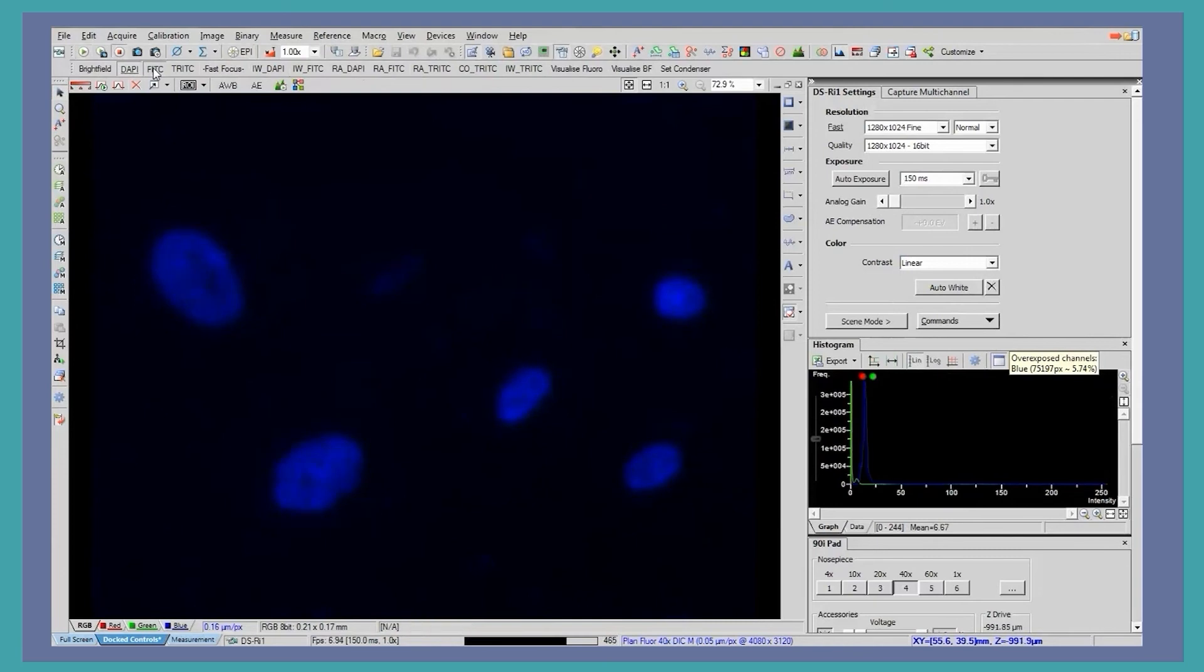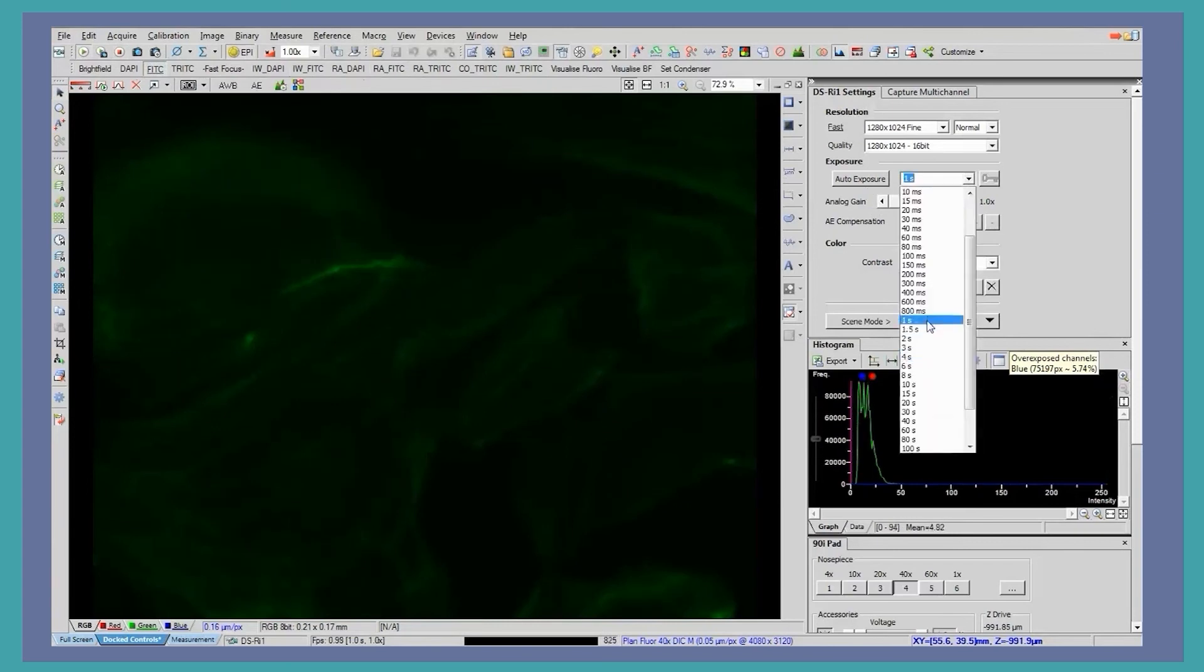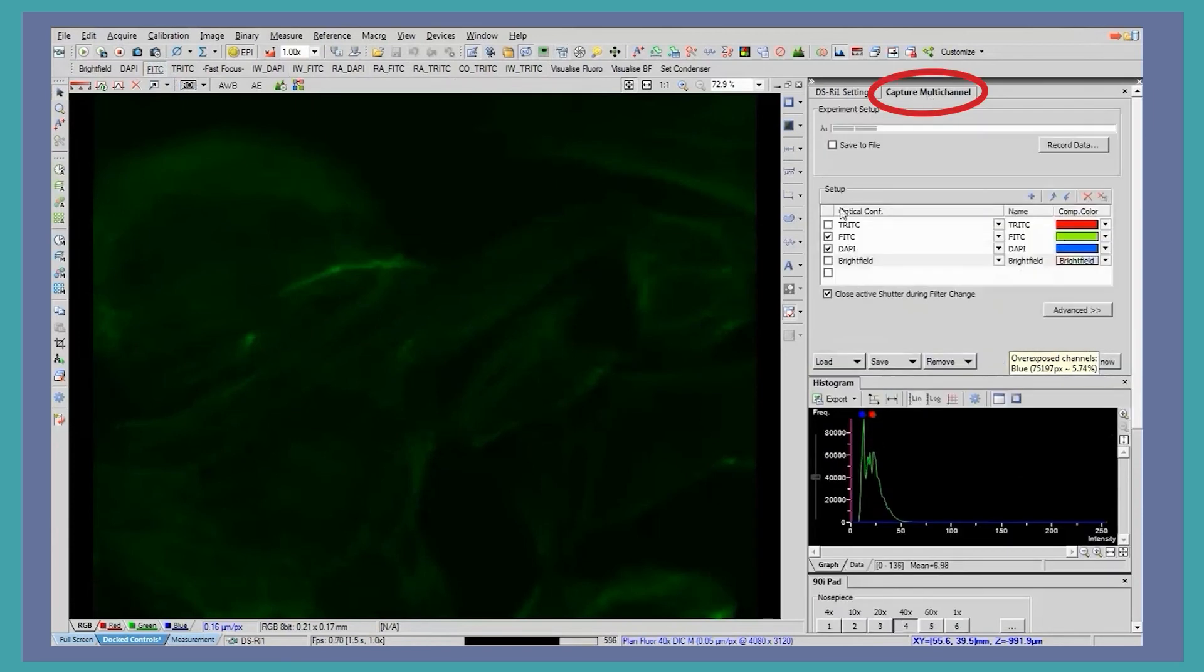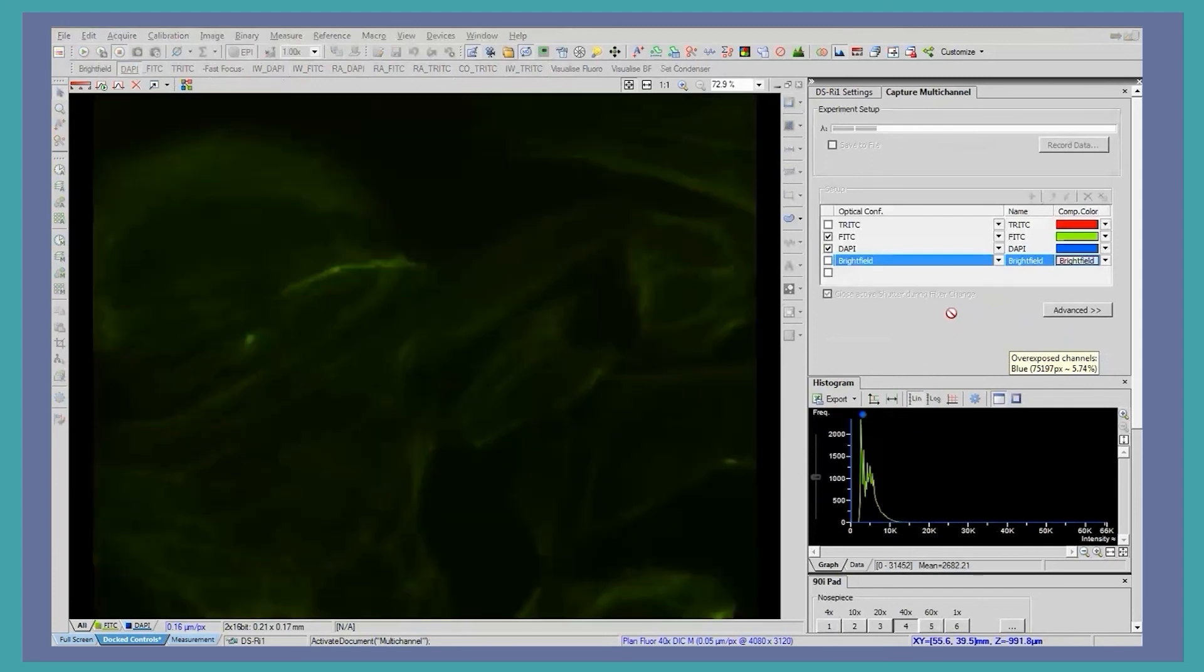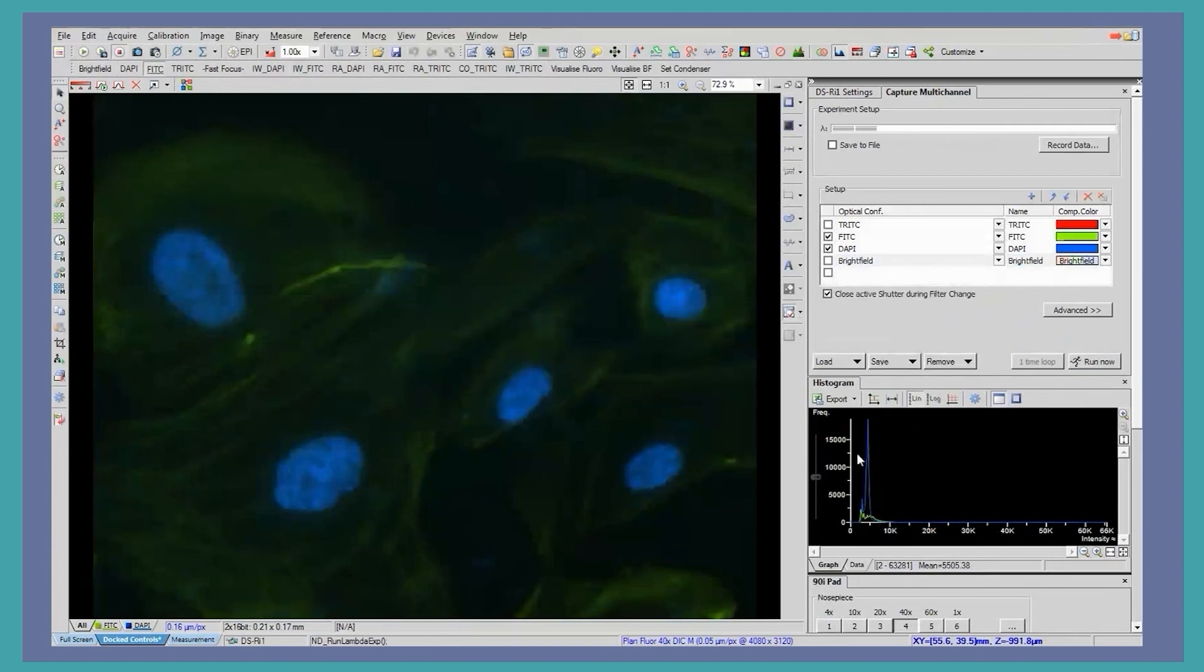This is FITC staining for the actin cytoskeleton of meningeal cells. Here we again adjust the exposure in a similar way where we can just see sharp detail into our image. We now select on the image interface that each channel lines up with its corresponding color that we have selected. We can then run and capture this image. During this process, the microscope will filter through the different filter blocks and acquire an image through each one that is selected. The image is then overlaid and saved, and we can clearly see the nuclei and cytoskeleton of the cells that we have captured.